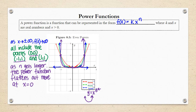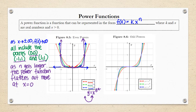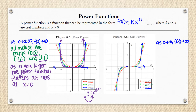Now let's look at some odd power functions. Odd power functions have this shape — in red we have x³, in green x⁵, and in blue x⁷. I like to say this is almost like an Egyptian dance, with one arm up and one arm down. As your x values are approaching positive infinity, your function is also approaching positive infinity. And as your x values are approaching negative infinity, your function is going down towards negative infinity.